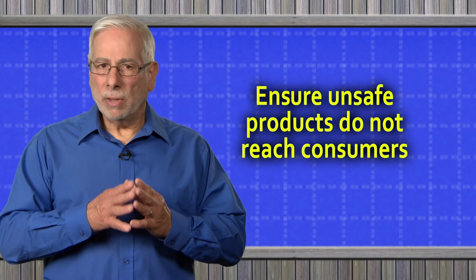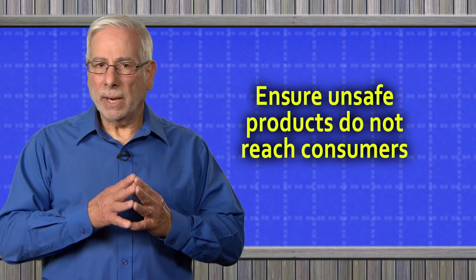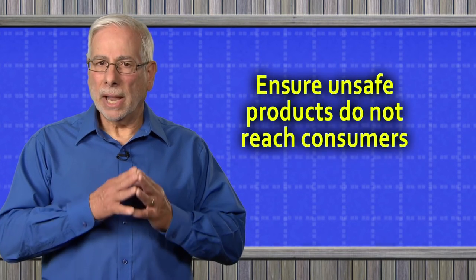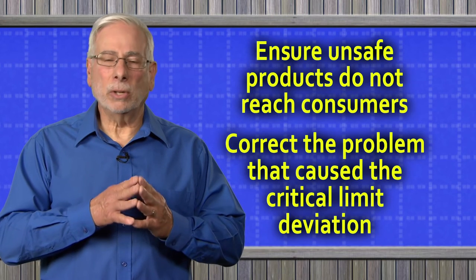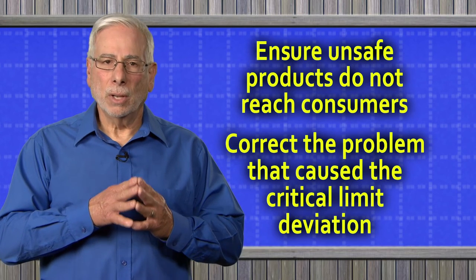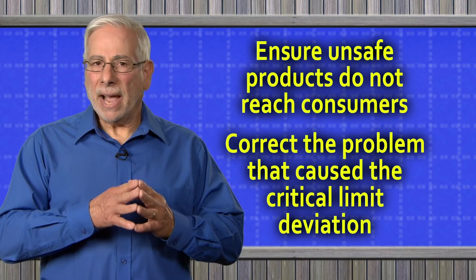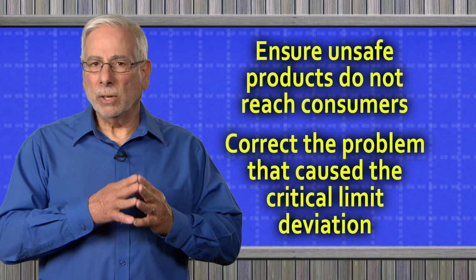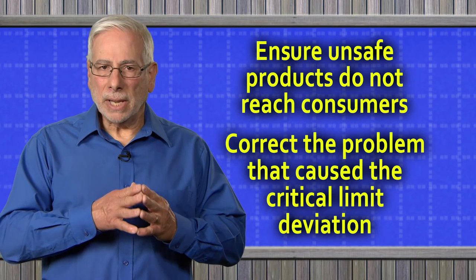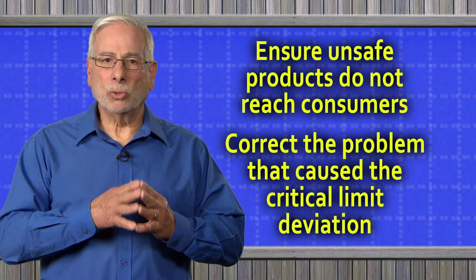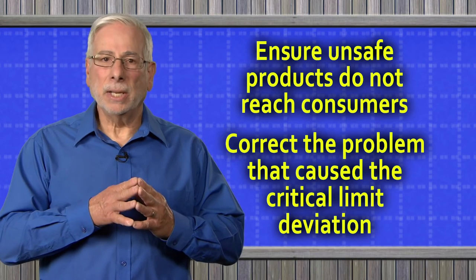A corrective action must be taken whenever there is a critical limit deviation. An appropriate corrective action procedure must accomplish two goals: ensure that an unsafe product doesn't reach the consumer, and correct the problem that caused the critical limit deviation. Corrective actions should relate to the specific critical limit, and FDA's recommendations are included with each control strategy listed in the Hazards Guide.